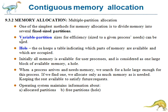This method was originally used by IBM. One technique used here is the concept of a hole. A hole means the operating system keeps a table indicating which parts of memory are available and which are occupied. Initially, all memory is available for user processes and is considered one large block of available memory — a hole. When a process arrives and needs memory, we search for a hole large enough for that process. If found, we allocate only as much memory as is needed, keeping the rest available for future requests.